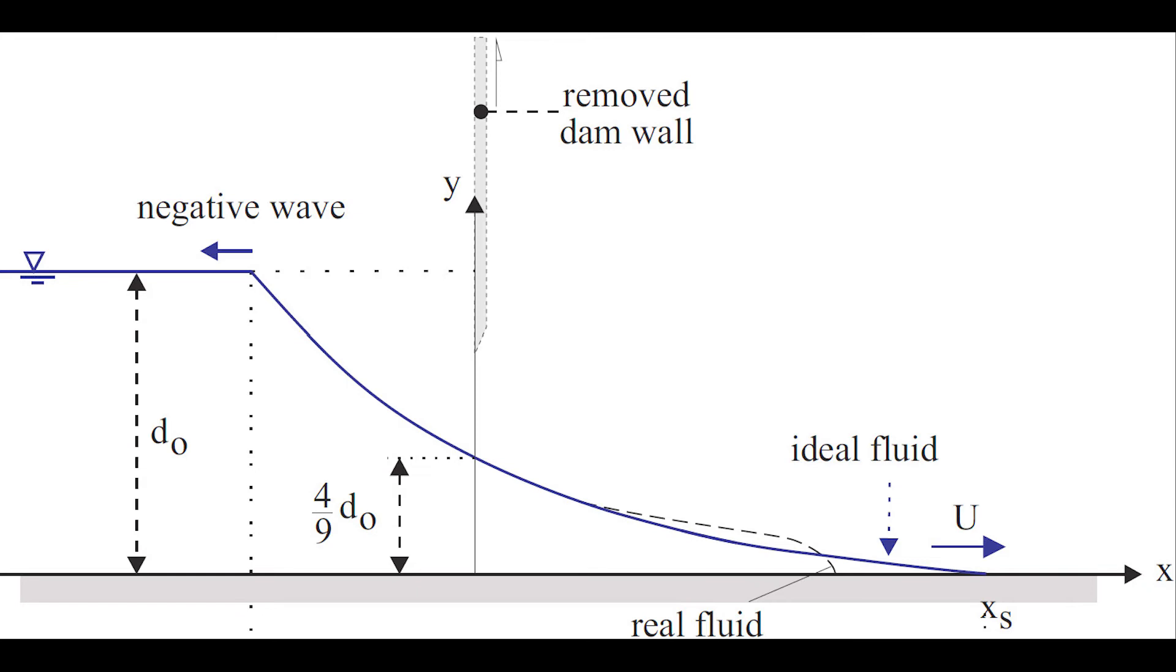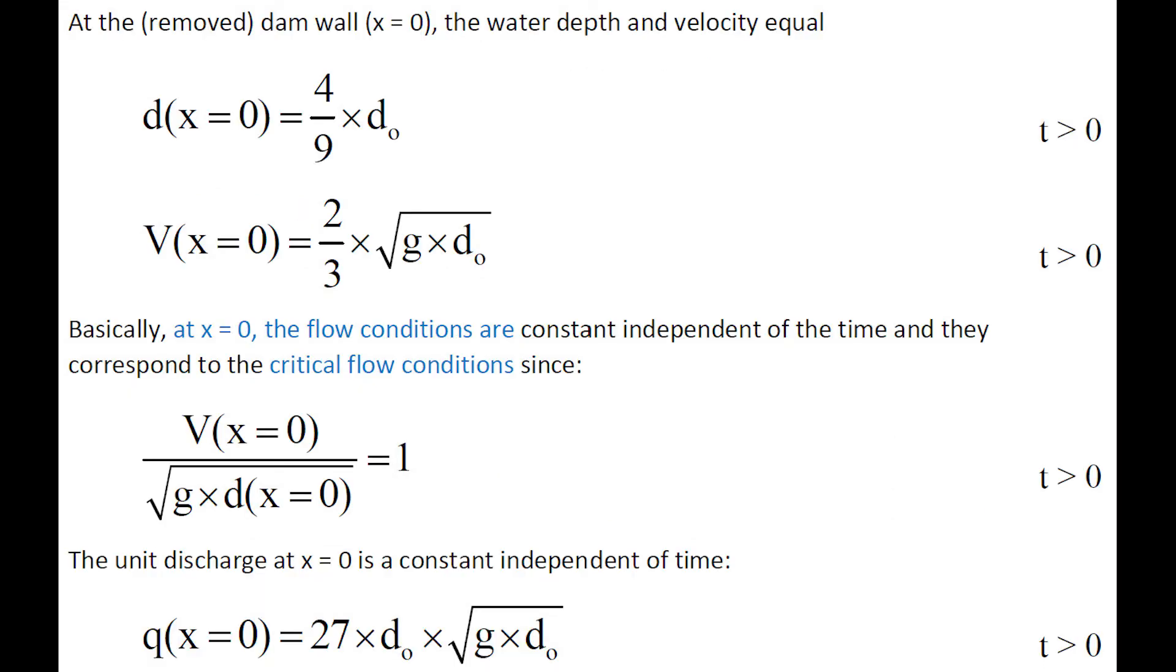At the location of the dam wall, x equals 0, the water depth and velocity are d equal 4 over 9 times D-not, and v equal 2 third of square root of G-D-not. That is, at x equals 0, the flow conditions are independent of time and correspond to critical flow conditions. The unit discharge at x equals 0 is a constant, independent of time.